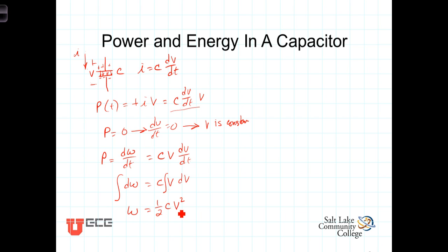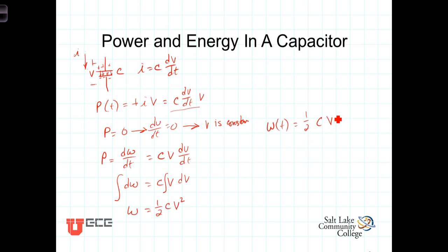In general, V is a function of time, so the energy will also be a function of time. We can write energy as a function of time: W(t) equals one-half C times V(t) squared.